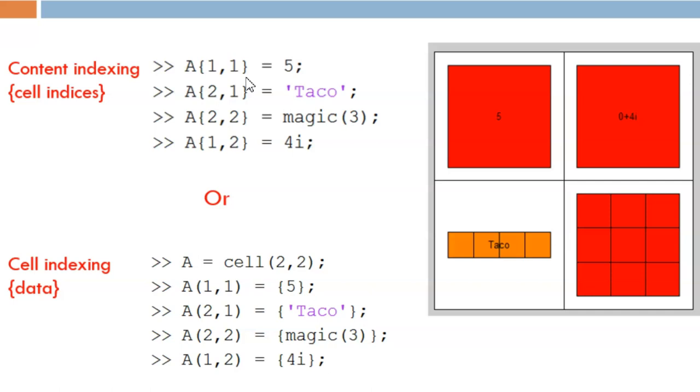Curly braces and parentheses appear very similar to each other. So to create the first cell, we provide the name of the cell array, A. Then in curly braces indicate the row and column of the specific cell. Then comes the assignment operator, and then the value we want to place in that cell. The same pattern is used for assigning all four of these cells.